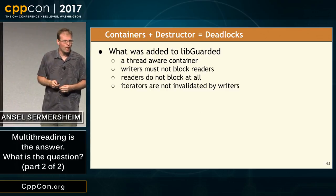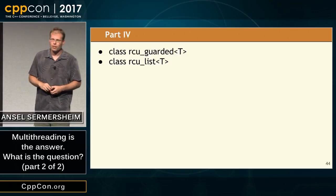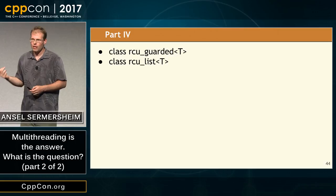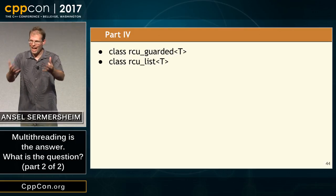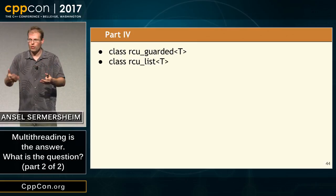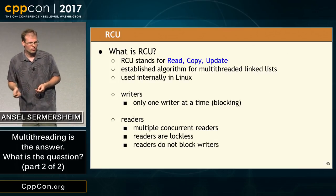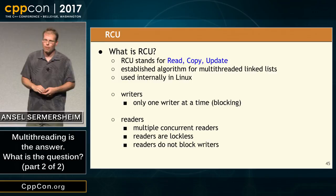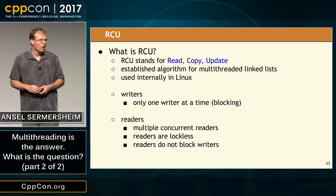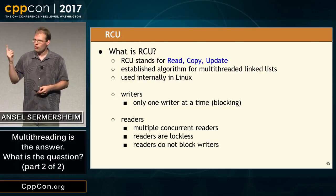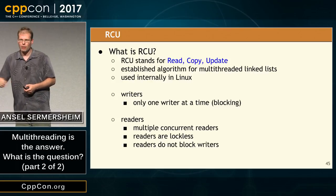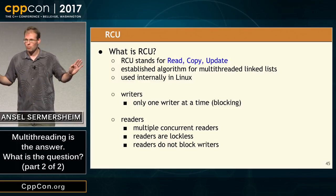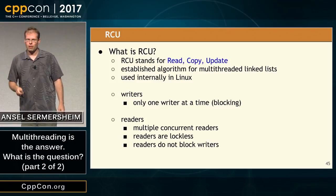Two classes: RCU_guarded and RCU_list. Since we're implementing a container, these classes need to work in concert. RCU_guarded is the outer wrapper that enforces access to the shared container, and the container itself must be written in a way that's aware of the threading. RCU is an algorithm used in many pieces of code including the Linux kernel — a well-established algorithm for managing linked lists in a multi-threaded way. The classical RCU algorithm is one writer at a time, so writers block writers. We have room for multiple concurrent readers, readers take no locks at all, and readers never block writers.